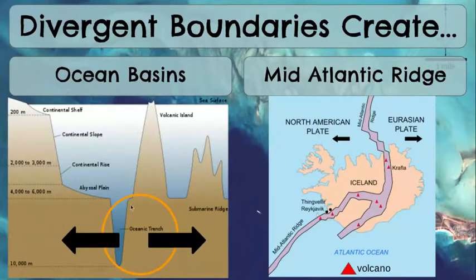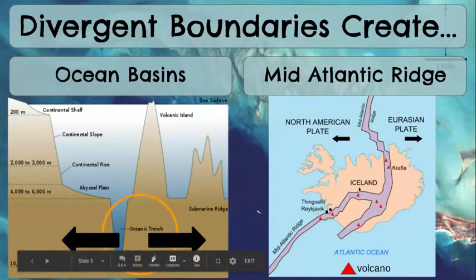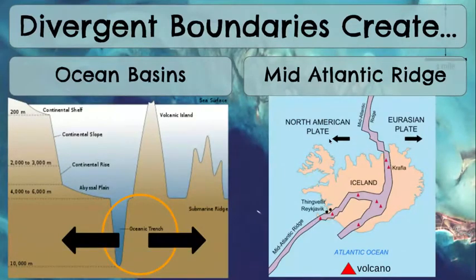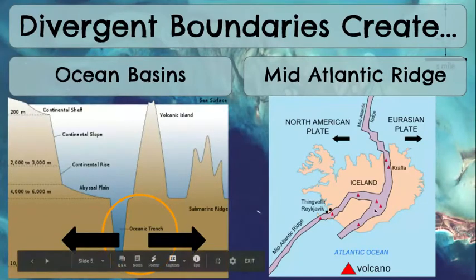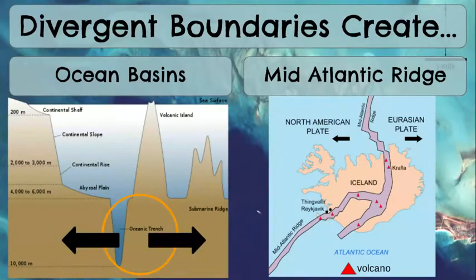Also, the Mid-Atlantic Ridge. We have Iceland over here, we have our Eurasian plate, and the North American plate. They are separating or dividing, allowing for volcanoes to form in the Mid-Atlantic Ridge. The Mid-Atlantic Ridge is a big one on tests — whether it's for the state or the district. They talk about the Mid-Atlantic Ridge and ridges and rift valleys a lot. So that's a big one to remember for divergent.